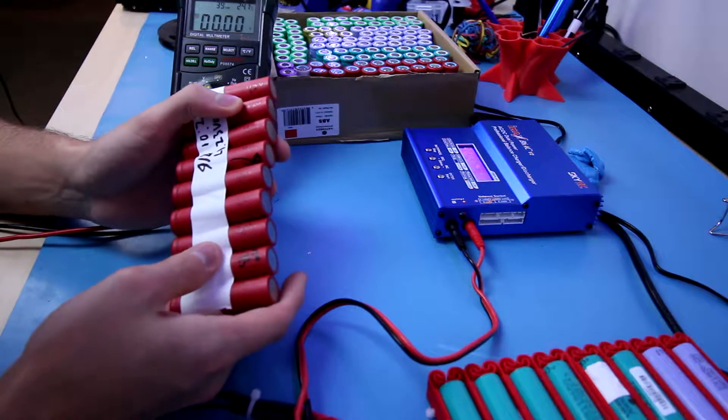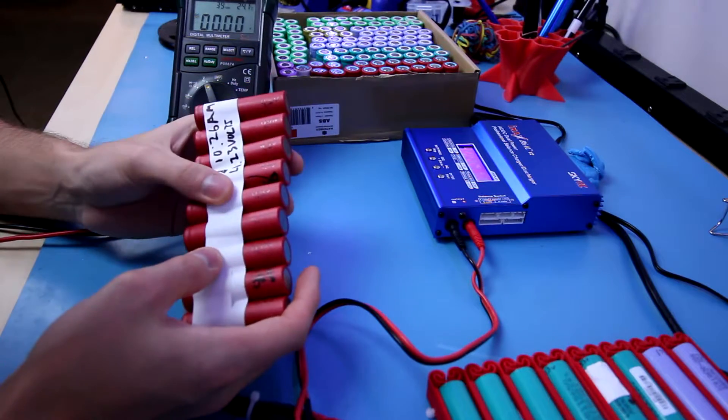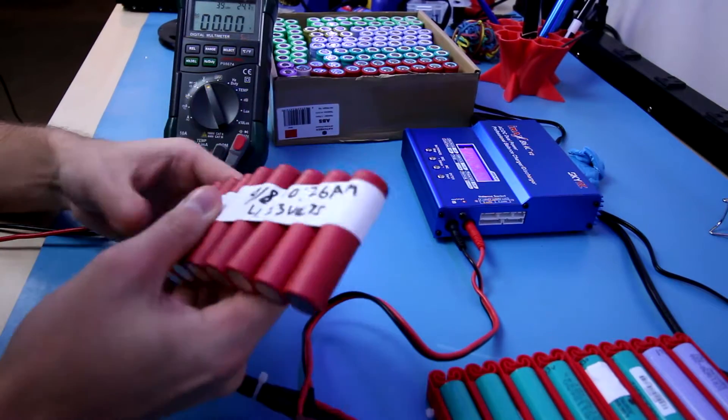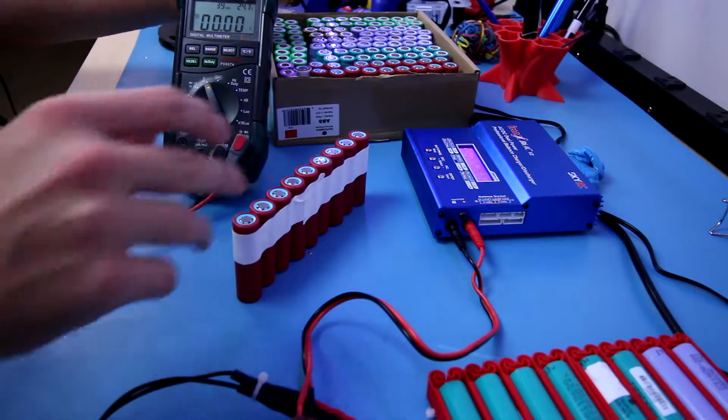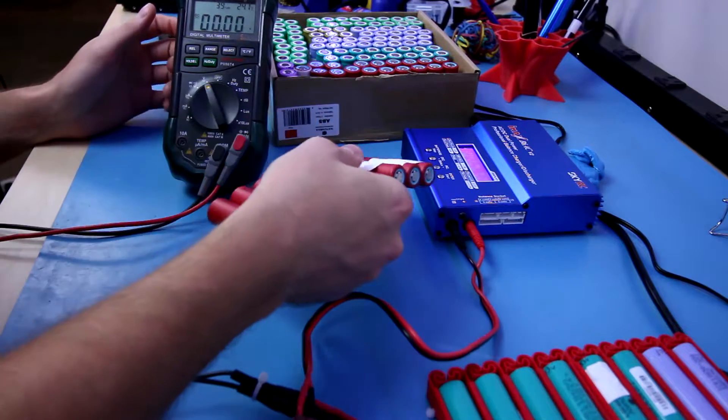We have anywhere between 4.21 and 4.15 so overall these are really good. I am glad. So I can go ahead and check. I'm going to go ahead and make a round three bin which these will be in.